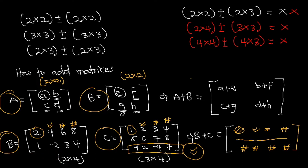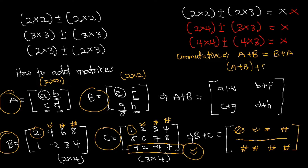Another thing we need to note is that addition of matrices is commutative. This means that matrix A plus B equals matrix B plus A. Also, if we add matrix A plus B first and then add C, it is the same as adding B plus C first and then adding A — provided all the matrices have the same order.